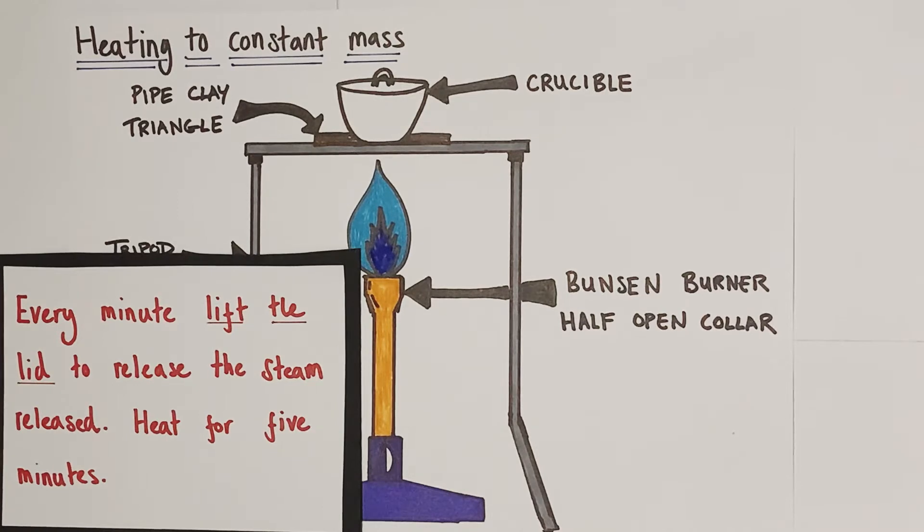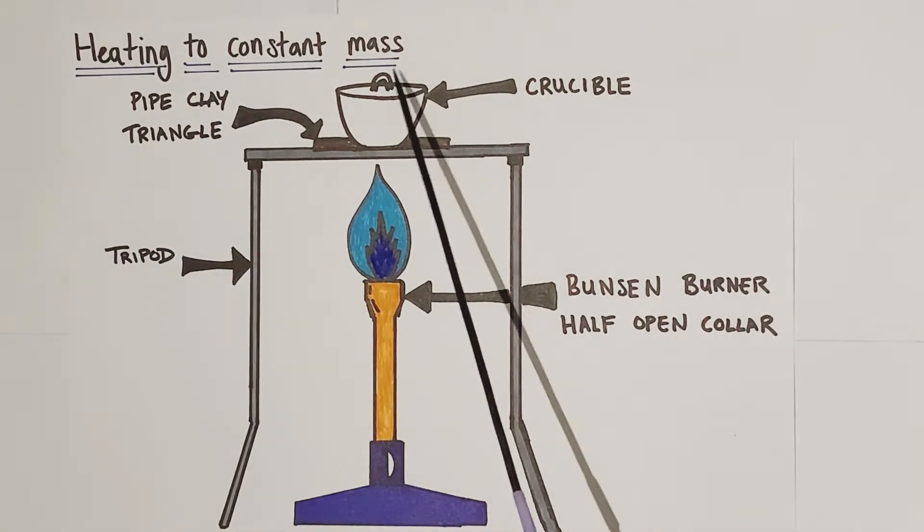Return the lid and carry on this process heating for five minutes. The main function of the lid itself is to prevent any spitting out of hot solid from the crucible because that would massively affect the recorded mass and therefore the accuracy of the value we would measure.